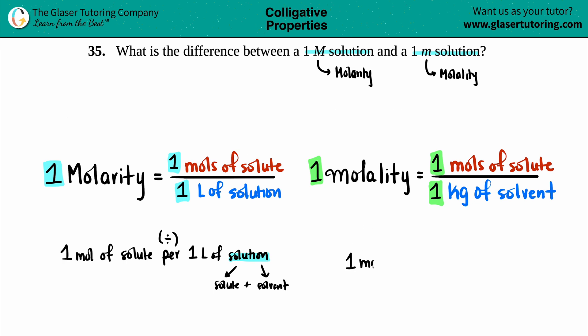And in this case, you have one mole of solute per, which is division, per every one kilogram of solvent. And the solvent is not the total solution. The solvent is just the liquid medium in which you're dunking your solute into. So the solute goes into the solvent, and together they make the solution.